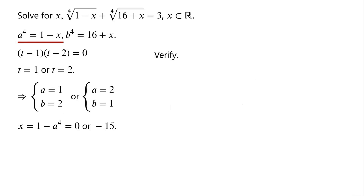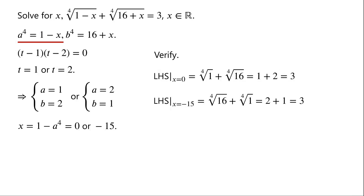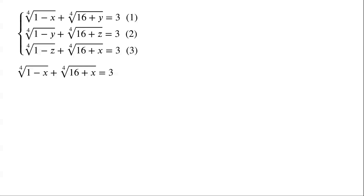Now we verify whether they are solutions of the original equation. When x equals 0, the left-hand side equals the fourth root of 1 plus the fourth root of 16, which equals 1 plus 2, which is 3. When x equals negative 15, the left-hand side equals the fourth root of 16 plus the fourth root of 1, which equals 2 plus 1, which is 3. So x equals 0 or negative 15 are solutions of the original equation.